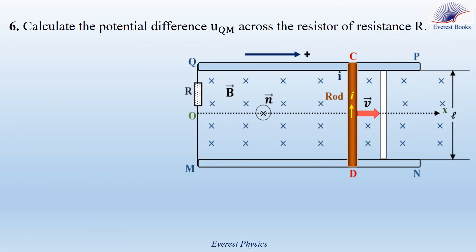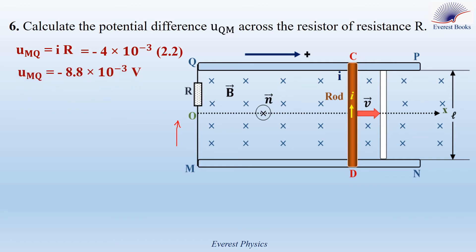Part 6: calculate the potential difference U_QM across the resistor R. The positive sense flows through the resistor from M to Q, so U_MQ = +IR = (−4×10⁻³)(2.2) = −8.8×10⁻³ V. Since U_QM = −U_MQ, we get U_QM = +8.8×10⁻³ volts.